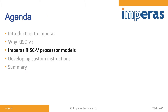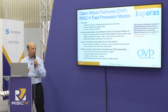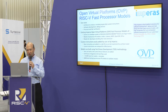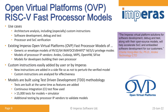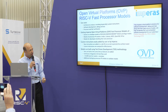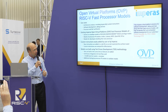Empiris builds processor models, which we call fast processor models, available on our Open Virtual Platforms website. These are instruction-accurate models used for architecture analysis, software development, debug and test, and also for processor and SoC verification. We have generic models of the full RISC-V specification — effectively the whole alphabet soup of the RISC-V spec, covering anything ratified or stable. We also have models of the processor IP vendors as I mentioned.